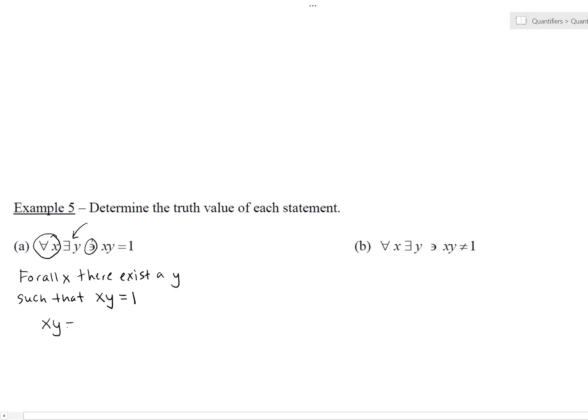If X times Y is one, then for all X we find X isolated by dividing both sides by Y. So pick any two real numbers X and Y. If X is zero, then there does not exist a Y such that X times Y equals one.